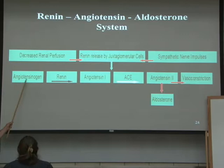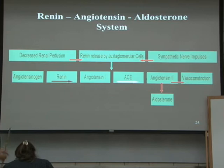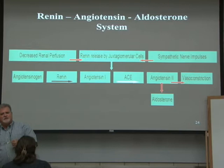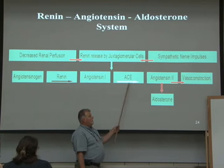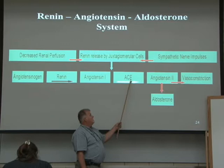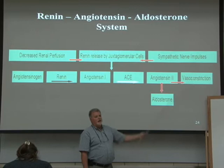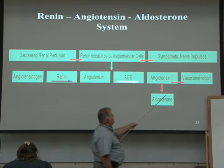The liver produces angiotensinogen, and it's in your blood all the time in an inactive form. It's one of the large proteins you don't want to pass through the filter. When juxtaglomerular cells release renin, it converts angiotensinogen to angiotensin 1. That then circulates to the lungs, where in the capillary beds we have an enzyme called ACE, which is angiotensin converting enzyme. ACE converts angiotensin 1 to angiotensin 2.